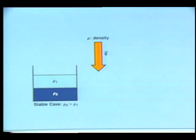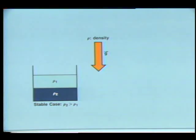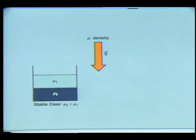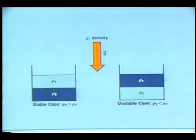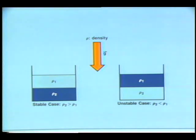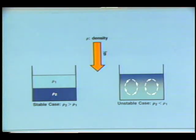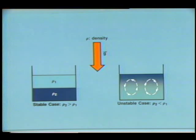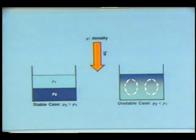In buoyancy-induced convection, otherwise known as Rayleigh convection, gravity is the dominant force. In stratified fluids, stability exists when heavier fluids lie beneath lighter fluids. That is why when a heavier fluid lies above a lighter one, the heavier fluid will tend to descend. When the criteria for stability are exceeded, the result will be fluid motion induced by gravity.